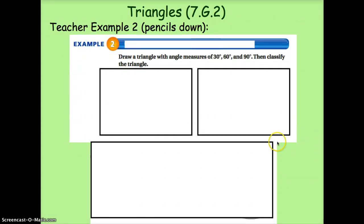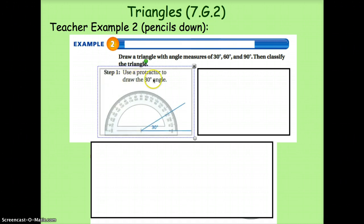Teacher example two, so go ahead and put your pencils down. Now it's asking us to draw a triangle with angle measures of 30, 60, 90, and then classify the triangle. This is going to take us a couple steps. First, we're going to start drawing one of the angles, for example, a 30 degree angle. Okay, so we go ahead and draw a nice acute angle.